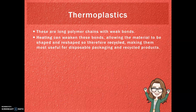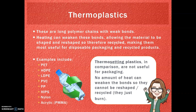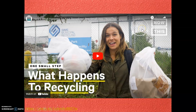Let's get into thermoplastics. They are long polymer chains with weak bonds, so heating can weaken these bonds, which allows them to be shaped, reshaped, and recycled. There are also thermosetting plastics, which I go into more detail in my other video — but these are not useful for packaging because they can't be heated and reshaped; they just burn. If you're interested in what happens to recycling, I can highly recommend a short video from One Small Step — she has a whole series and it's absolutely fantastic.